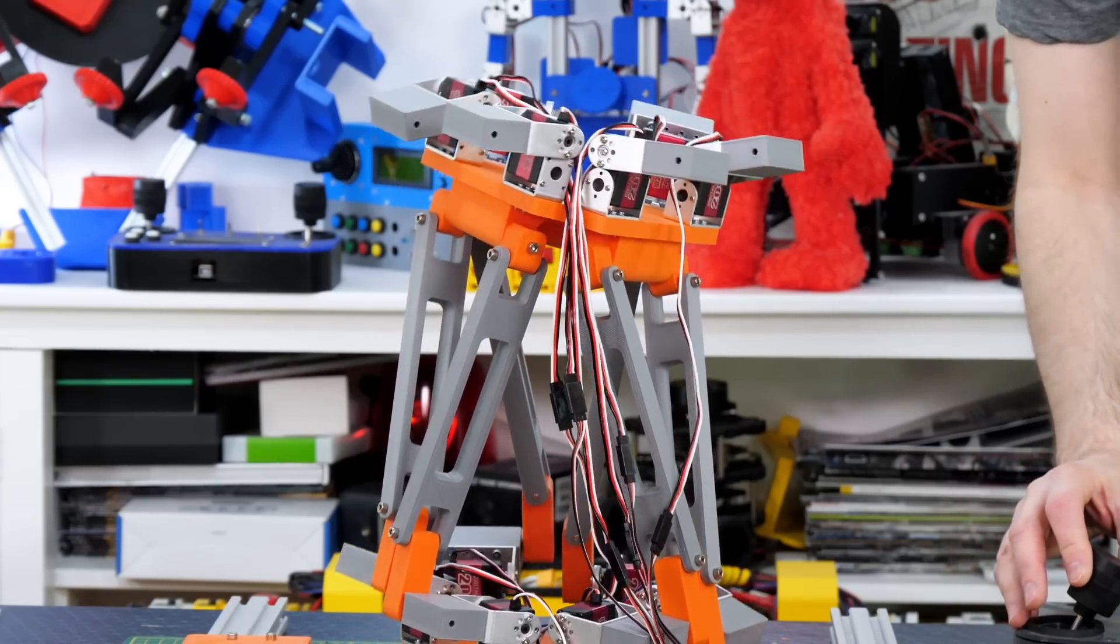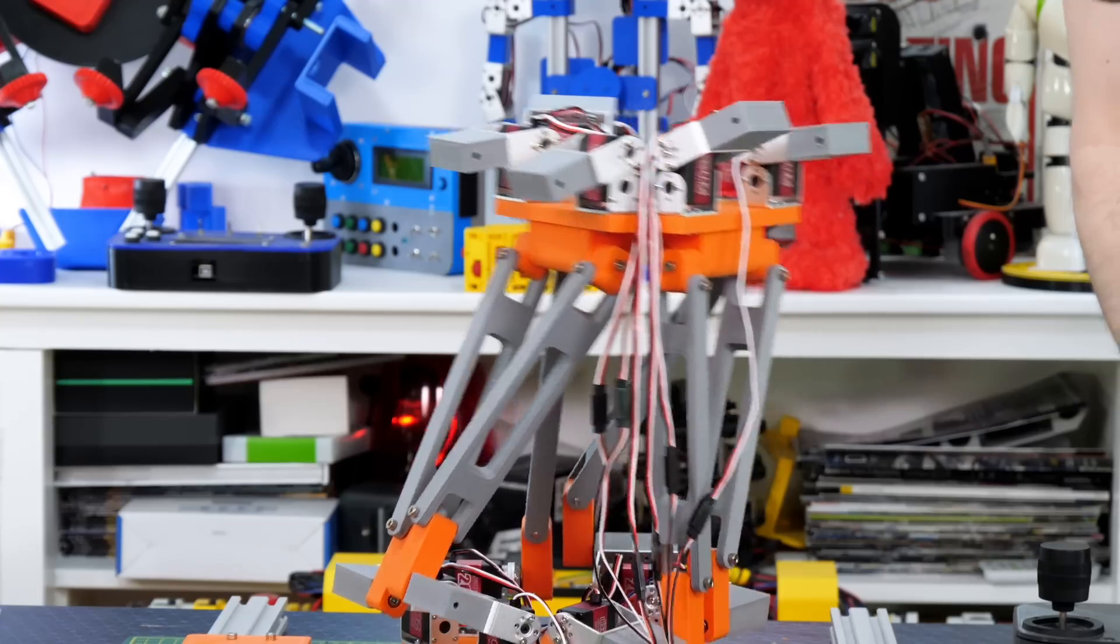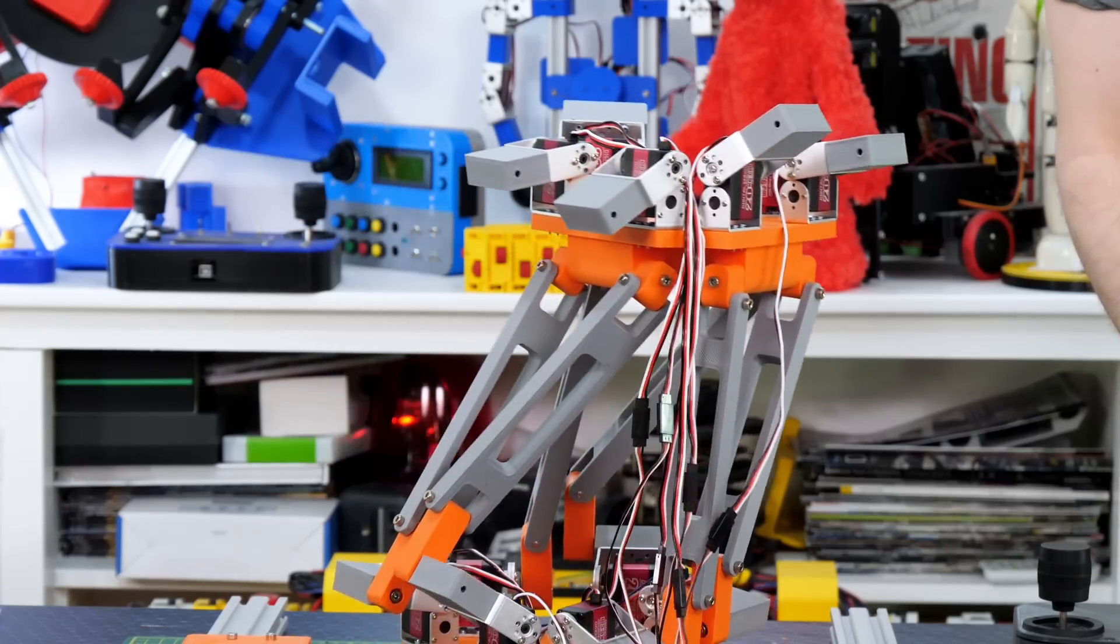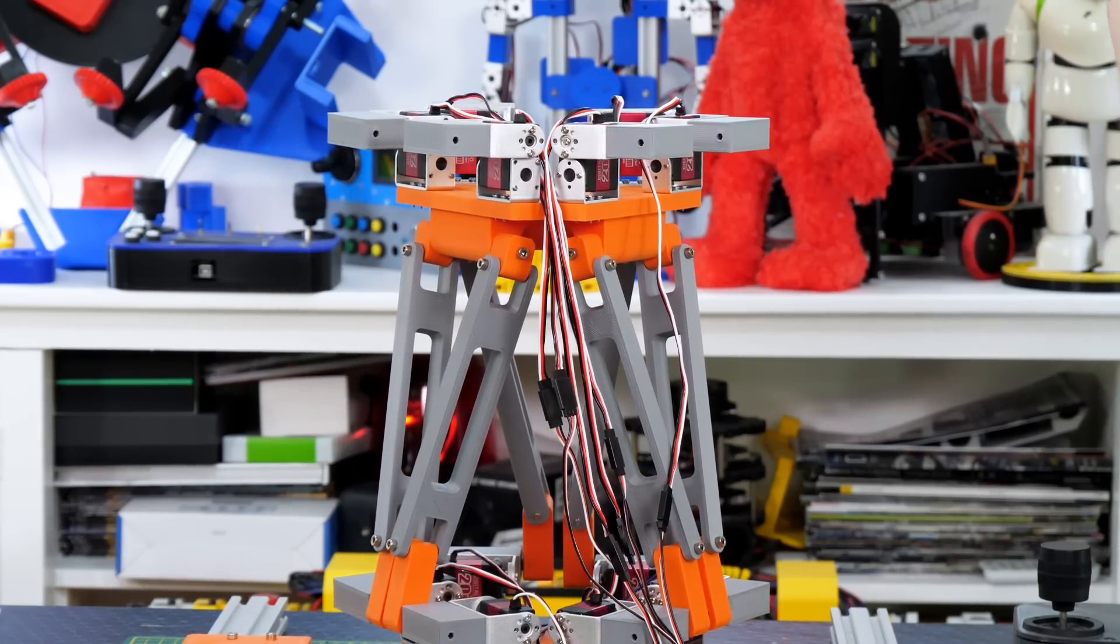So if I switch that second segment over and reverse all the positions, then we can see it tries to keep it level as we do the tilt motion. Basically those servos are just moving in the opposite direction to the base servos and that means we can get the second section to move in the opposite direction as well. So I'm pretty happy with how that's worked out.